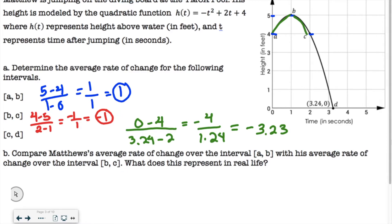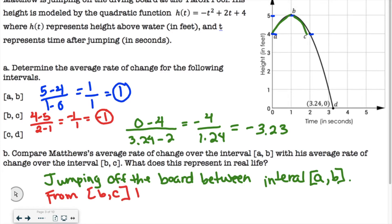So it says, what does this represent in real life? Well, remember, he's diving off the diving board. So this must be where he is jumping off the board between interval A and B. And then from B to C, he must be starting to dive towards the water. And from B to C, he is starting, he's not going into the water yet, but he's starting to dive towards the water.